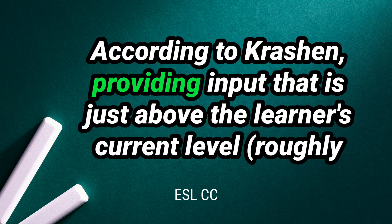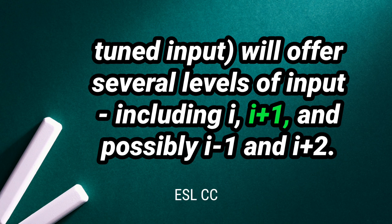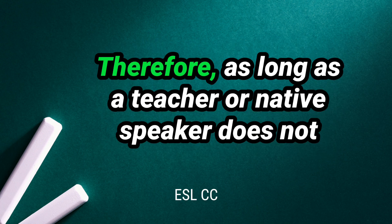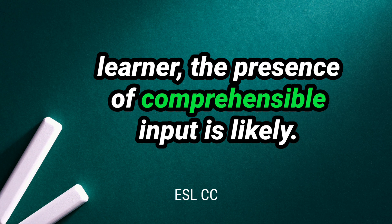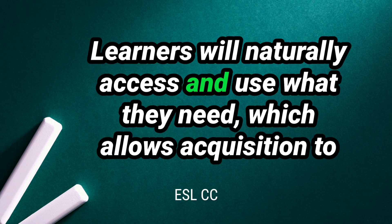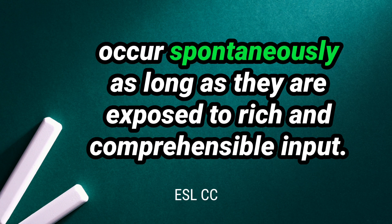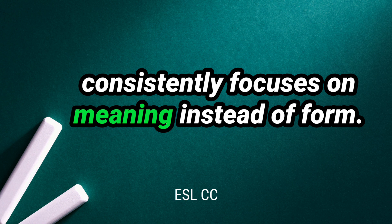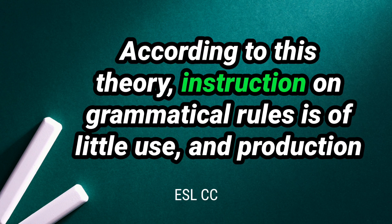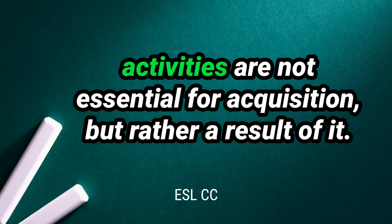According to Krashen, providing input that is just above the learner's current level will offer several levels of input, including I, I-plus-1, and possibly I-minus-1 and I-plus-2. Therefore, as long as a teacher or native speaker does not speak too quickly or use overly complex language with a low-level learner, the presence of comprehensible input is likely. Learners will naturally access and use what they need, which allows acquisition to occur spontaneously as long as they are exposed to rich and comprehensible input. This is most likely to happen when communication consistently focuses on meaning instead of form. According to this theory, instruction on grammatical rules is of little use, and production activities are not essential for acquisition, but rather a result of it.